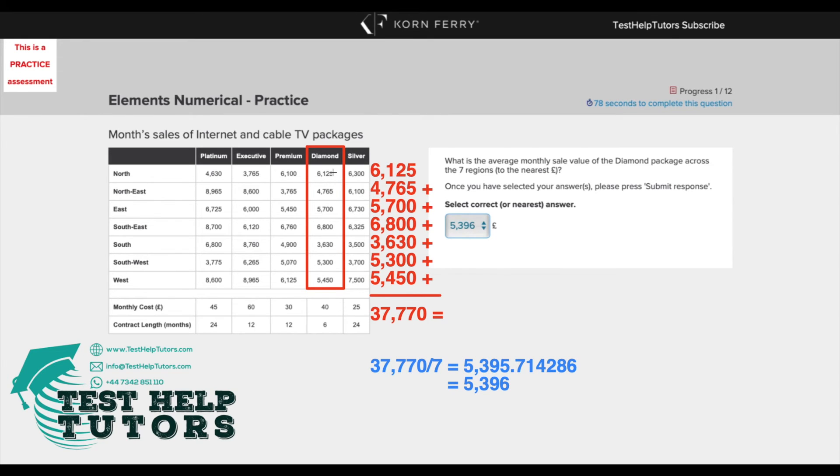So I've worked out the total for you here where I've just added up all of these numbers. So when you take the sum of all of these numbers you get 37,770 and this is the total.